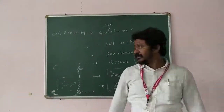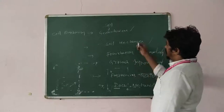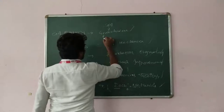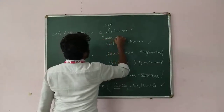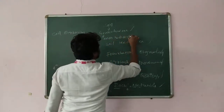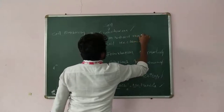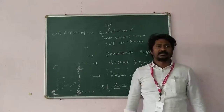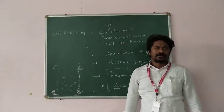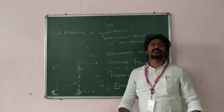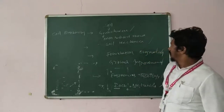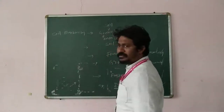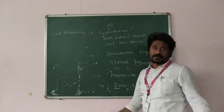In geotechnical engineering, 'geo' means earth-related materials — just as we discussed: clay, silt, gravel, boulders, aggregates. These are the earth-related materials. These materials we have to use in construction purposes — whatever it may be, whether it is a major dam or any type of structure. We have to use those particular materials.